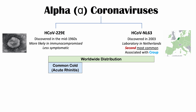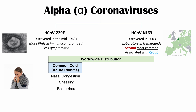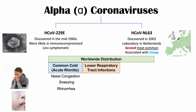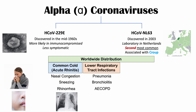These alpha coronaviruses cause the common cold or acute rhinitis — nasal congestion, sneezing, and rhinorrhea. They can also cause significant lower respiratory tract infections like pneumonia or bronchiolitis, and can be a cause of acute exacerbation of COPD. Certain patients are more at risk of severe presentation, including young children, older adults, and immunocompromised individuals — essentially extremes of age and those with a lower immune system.